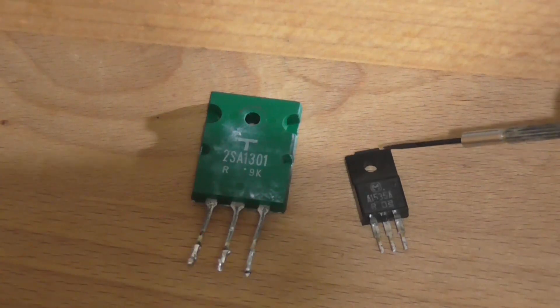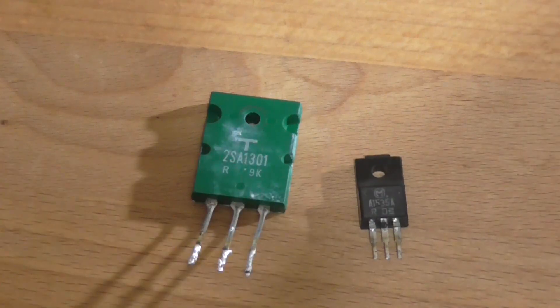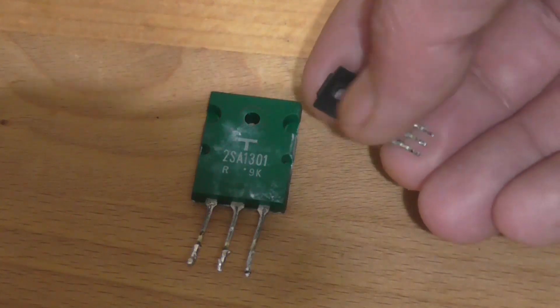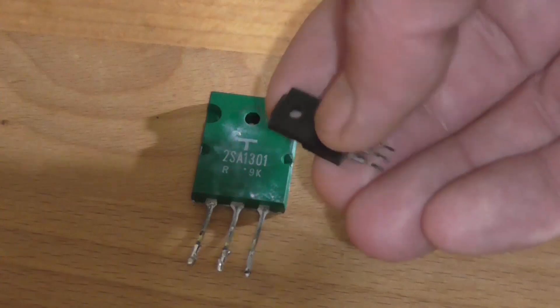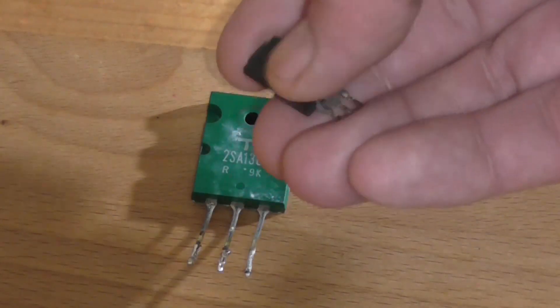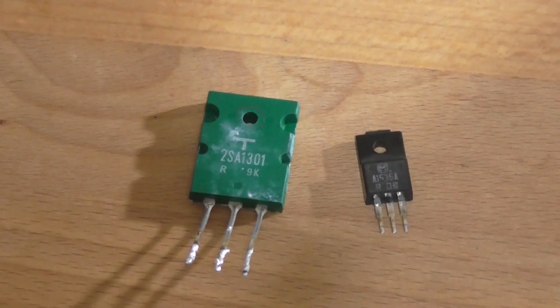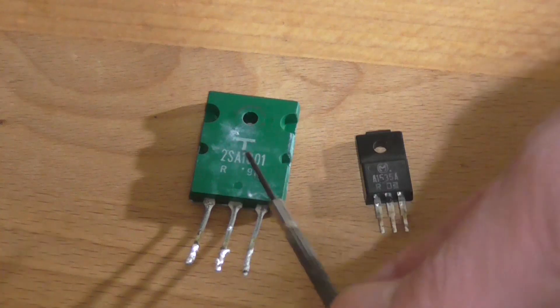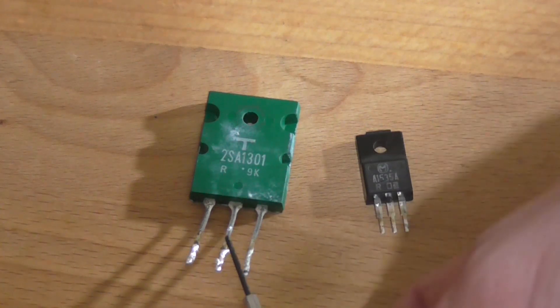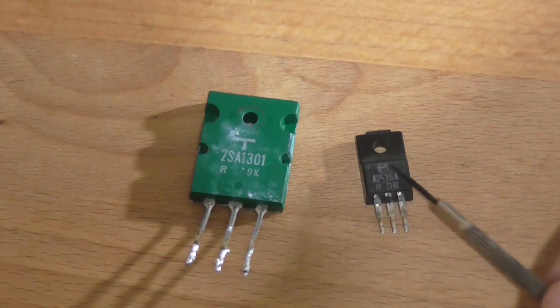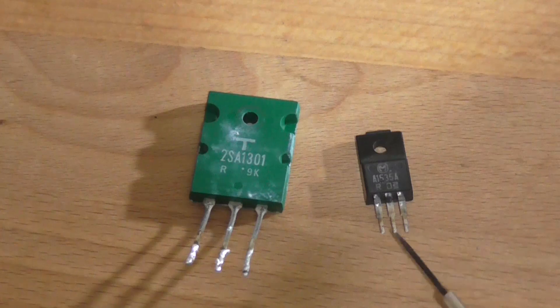And this is a TO220 flat pack transistor which is pretty standard. This one's just a fully insulated one. A lot of them just have a metal tab here to mount to a heat sink. So the way the pinouts on these go is on the TO3P and the TO3PL, the base is the left pin, the collector is the center pin, and the emitter is the outer pin. The same is also true for this transistor. The base is on the left, the collector is in the middle, the emitter is on the right.